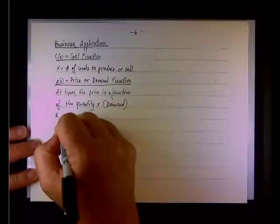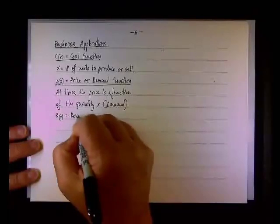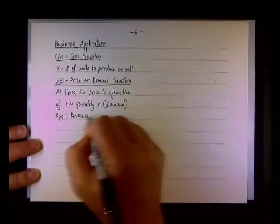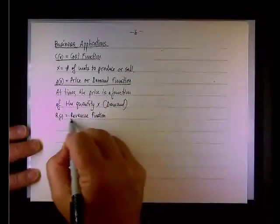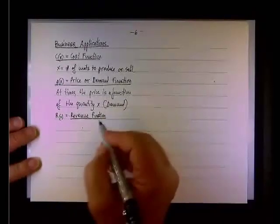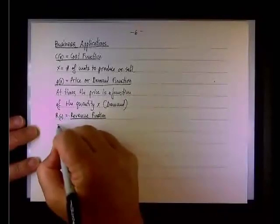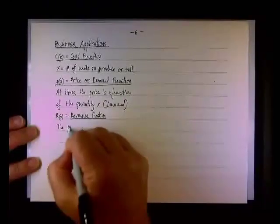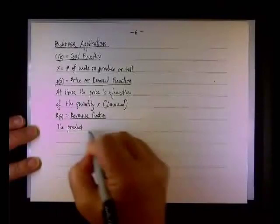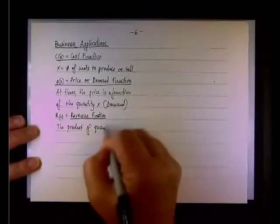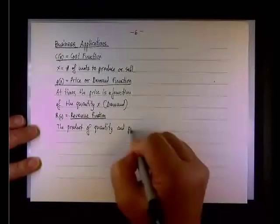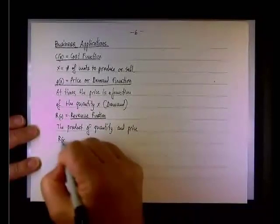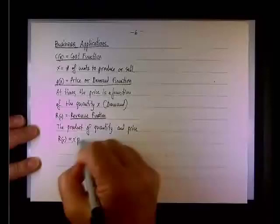Now, the next item is the revenue, R(x). The revenue as a function of x is simply the price multiplied by the quantity. So it's the product of price and quantity. Or you can write R(x) is simply x times P(x), like so.